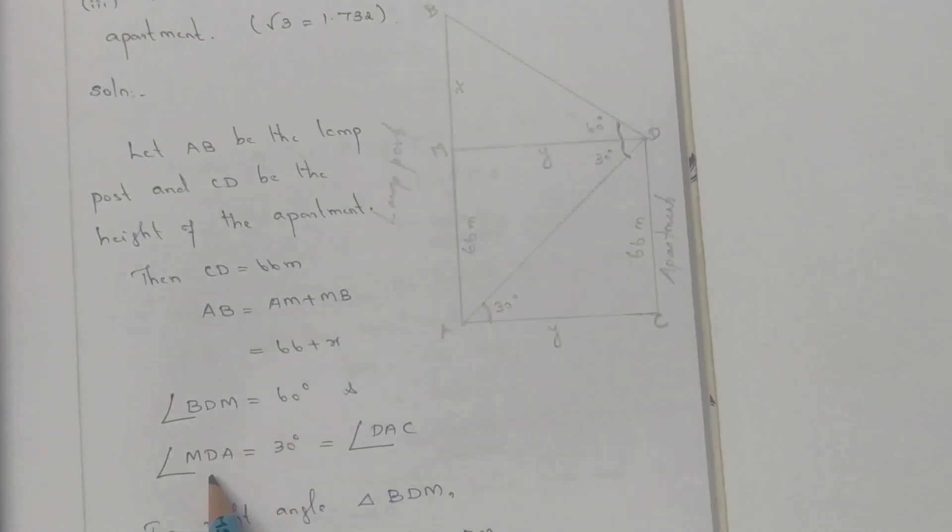Angle BDM is 60 degrees, angle MDA is 30 degrees. DAC is the alternate angle, which is equal. In the right angle triangle BDM,